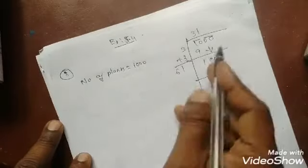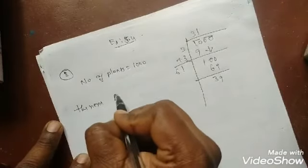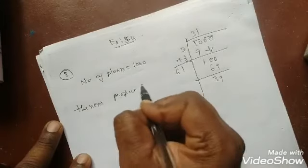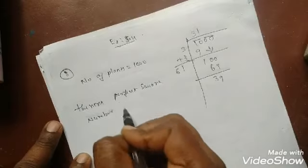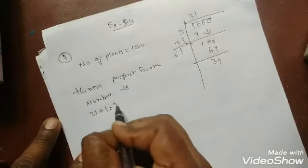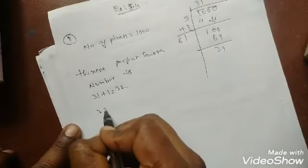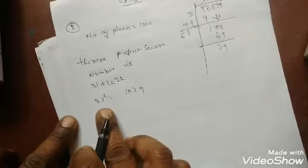The next perfect square number, add 1 to get 32. 32 square find out, you will get 1024. 2 times multiply.